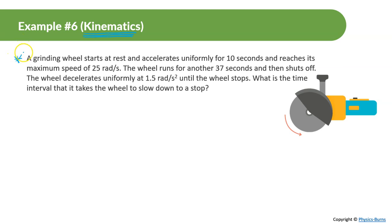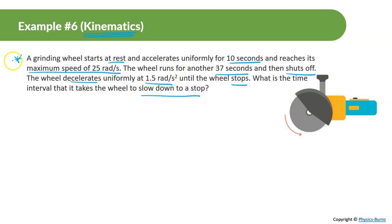We have a grinding wheel that starts at rest and accelerates uniformly for 10 seconds, reaching a maximum speed of 25 radians per second. The wheel runs for another 37 seconds and then shuts off. The wheel decelerates uniformly at 1.5 radians per second squared until the wheel stops. The question asks: what is the time interval it takes the wheel to slow down to a stop? There's a lot of information here, but most of it isn't necessary — all we care about is how long it takes to stop once it's shut off.